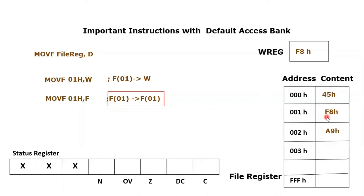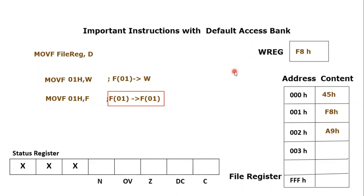What is the advantage of this? This is a very important point about this instruction: MOVF is the only data movement instruction that can actually affect the status flag register. So if you move the content of a file register into the same file register and that result affects the status register — for example, if the content of file register 01h is zero, then copying and pasting zero back sets the zero flag high — that can lead to various conditional instruction checks. That is the importance of this instruction. Normally, MOVF is used to move the content of any file register into the working register.